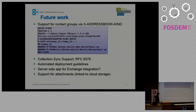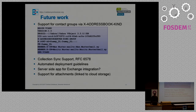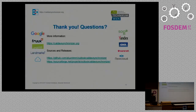For future work, as already mentioned, we try to support more kinds of contact groups — for example, the extended vCard address group format with group members. We want to implement the collection sync report, which should speed up the initial synchronization. Maybe there is even the possibility to implement a server-side solution natively on the Exchange server. We will support attachments soon, possibly linked to cloud storage — for example, the Nextcloud API would support that. And there are a lot of other ideas and future tasks to do.